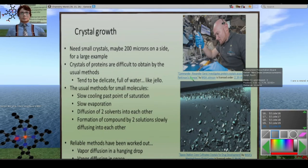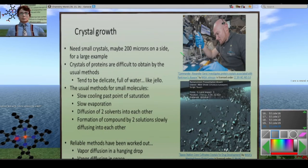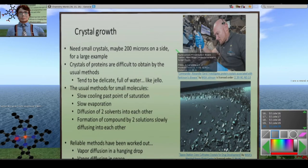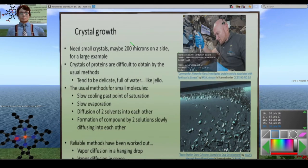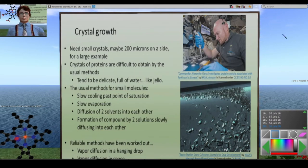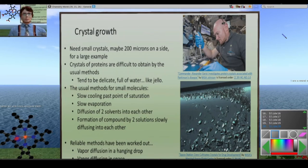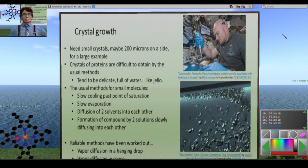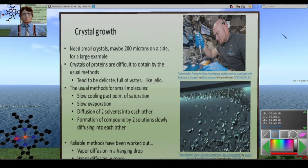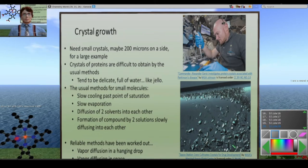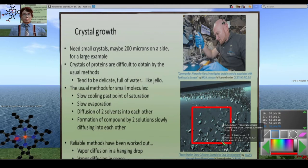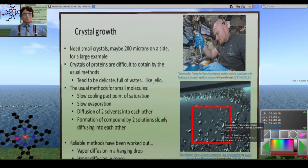The crystal growth part really deserves some mention here. It's an art to grow crystals, especially of proteins. They are not guaranteed to give you crystals. I was able to find some nice photos from NASA. Here's Commander Alexander Gerst as he is setting up proteins to be crystallized in space. Crystallization under zero gravity conditions evidently works really, really well. Here are some crystals that were actually grown in space.